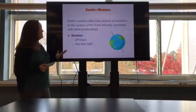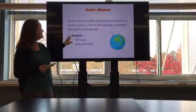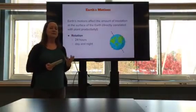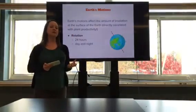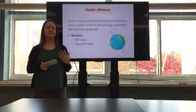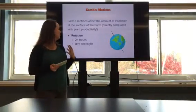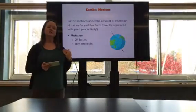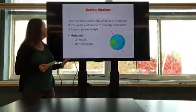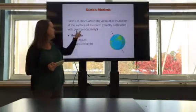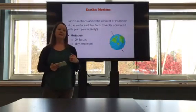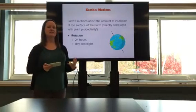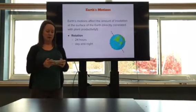So the first motion that we're going to look at is rotation. The Earth is spinning on its axis, which is what gives us day and night. It takes 24 hours to rotate on our axis. So for half of that time, we're facing towards the sun, it's daytime. The other half, or tilted away, it's nighttime. Now the other thing that the motions of the Earth affect is plant productivity, because the greater the insolation, the more photosynthesis and energy that's being produced by our primary producers.